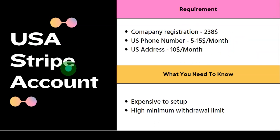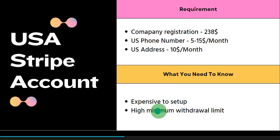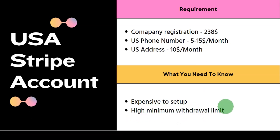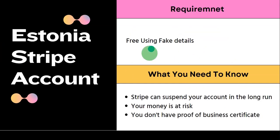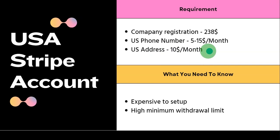If you calculate all these things together, you will notice you are spending over $250 just to set up this US Stripe account. You should also know that there is a higher withdrawal limit with this option compared to the other option I'll show you later. But if you're okay with spending that, it is still a better option than the Estonia account where you risk losing your money.